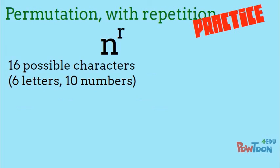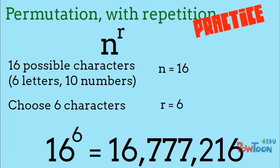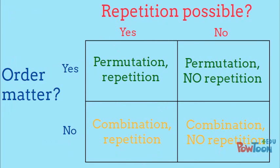There are 16 possible characters, 6 letters and 10 numbers, and we're choosing 6, so there are 16 to the 6th, or 16,777,216 possible hexadecimal colors. So that's permutations with repetition.